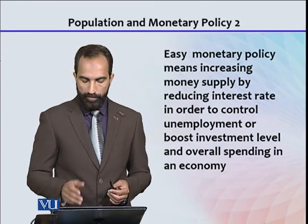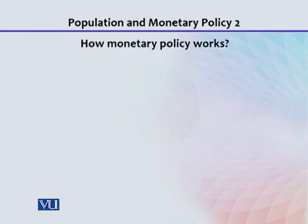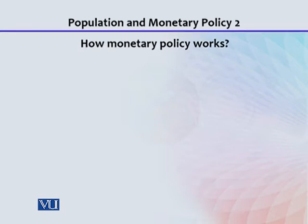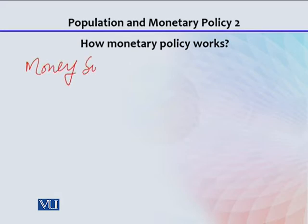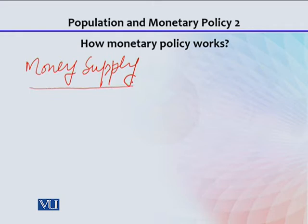So these are the easy and tight monetary policies, and this is how monetary policy works. To reduce money supply — which is tight monetary policy — the government can use open market operations, increase reserve requirements, or simply increase the rate of interest.